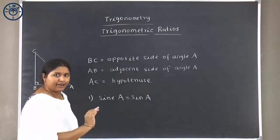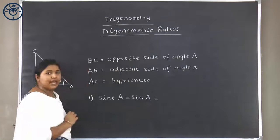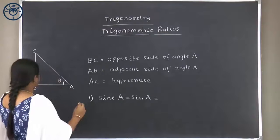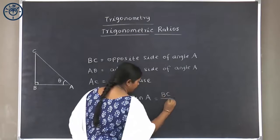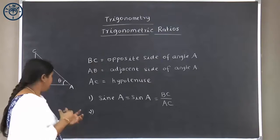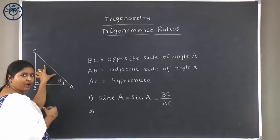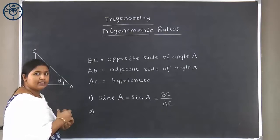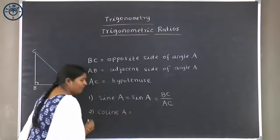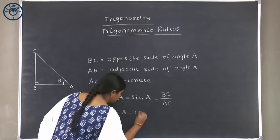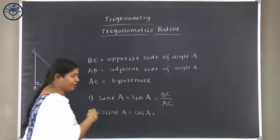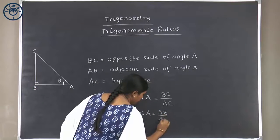Sine of angle A is equal to the opposite side divided by the hypotenuse — here it is BC by AC. The second ratio connects the adjacent side and the hypotenuse. That ratio is known as cosine A, or simply cos A. Cos A is the ratio of the adjacent side to the hypotenuse, which is AB divided by AC.